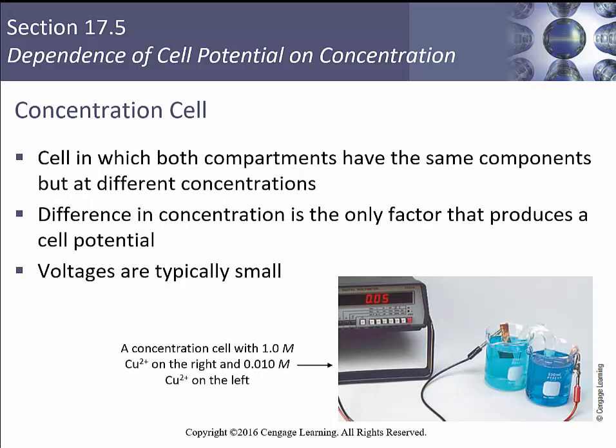We can actually make something called a concentration cell. Anytime you've got an uneven distribution of things, you have a potential, and if you've got a potential, you can probably exploit it to do some work. Here we've got compartments with the same components but at different concentrations, and the difference in concentration is the only factor that produces the cell potential. The voltages are usually pretty small — a concentration cell with 1 molar copper on the right and 0.01 molar on the left gives only about 0.05 volts.